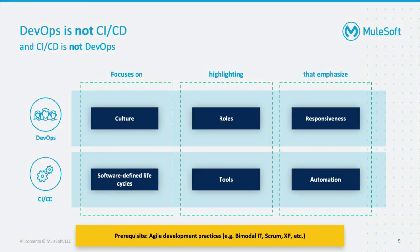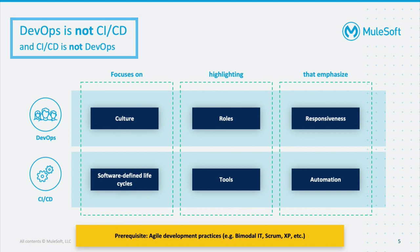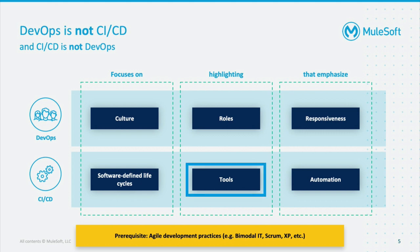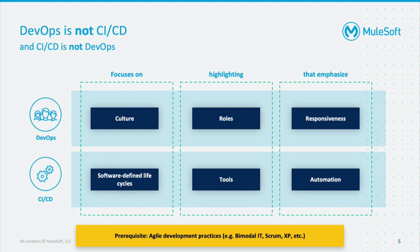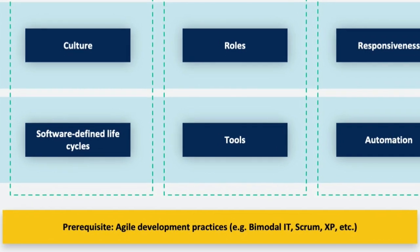How can we solve this? That's when we introduce CI/CD and DevOps. But before we jump in, let's not confuse DevOps with CI/CD. DevOps focuses on team culture — what the roles are, how they're defined, and how quickly they can get responses or provide feedback, meaning responsiveness. CI/CD on the other hand focuses on the software-defined lifecycle — what tools you're going to use and how to automate everything you possibly can. The prerequisite here is iterative development practices such as agile.